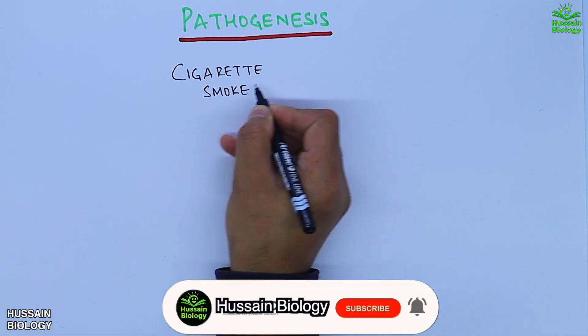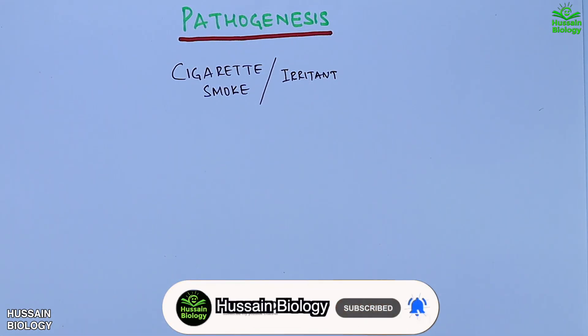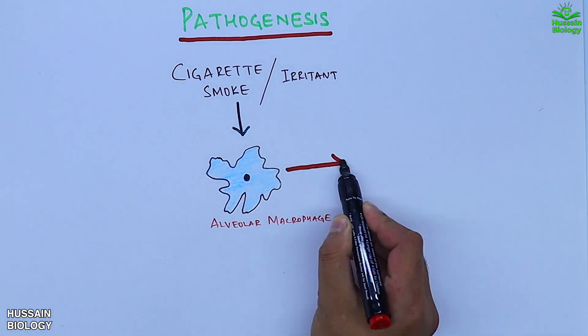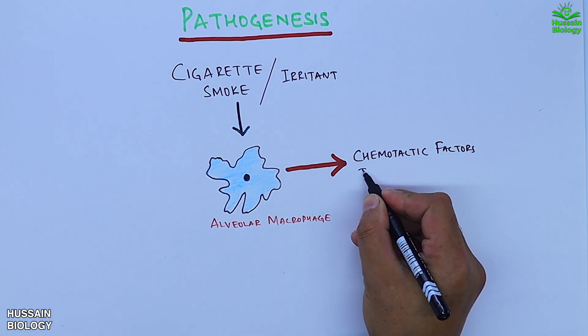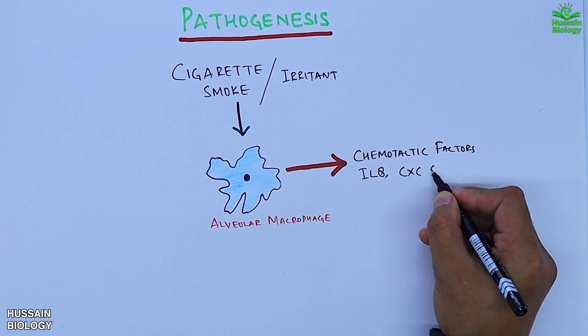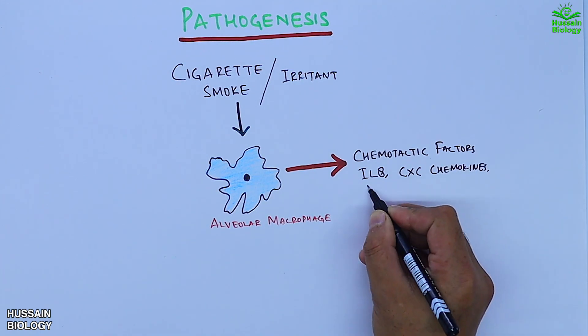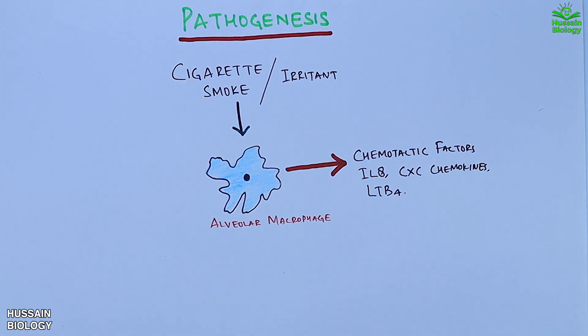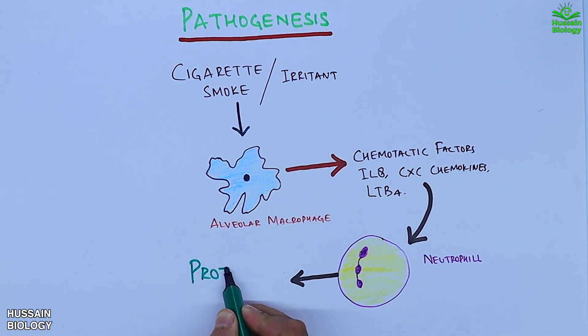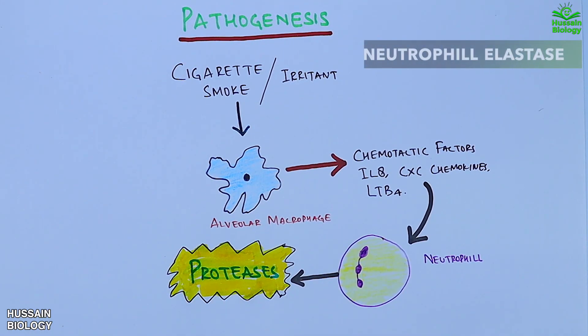Let's see this process in detail. We see we have incoming cigarette smoke or irritant. It stimulates the alveolar macrophages to release chemotactic factors like IL-8, CXC chemokines, and LTB4.